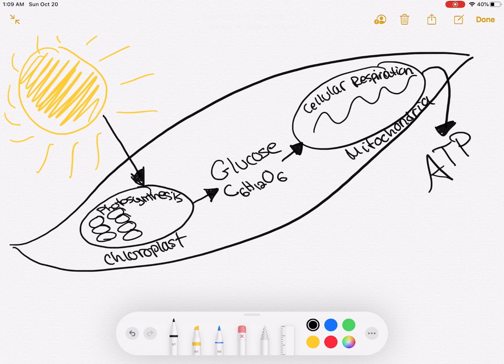So you'll notice this doesn't have everything like every reactant and product from photosynthesis and cellular respiration but this tells you a basic flow. A leaf does both processes of photosynthesis and cellular respiration.